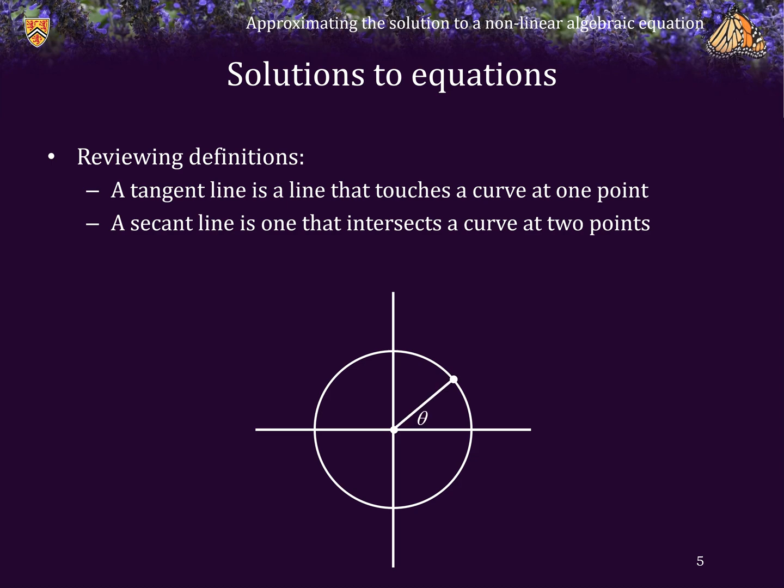If we have an angle theta that meets the unit circle, then this line here is a tangent line to the circle that happens to intersect the circle at the same point as the angle theta. Consequently, this distance here is, by definition, tan theta, and this distance here is the complementary tangent of theta. Similarly, this distance here is secant theta, while this distance here is cosecant theta.